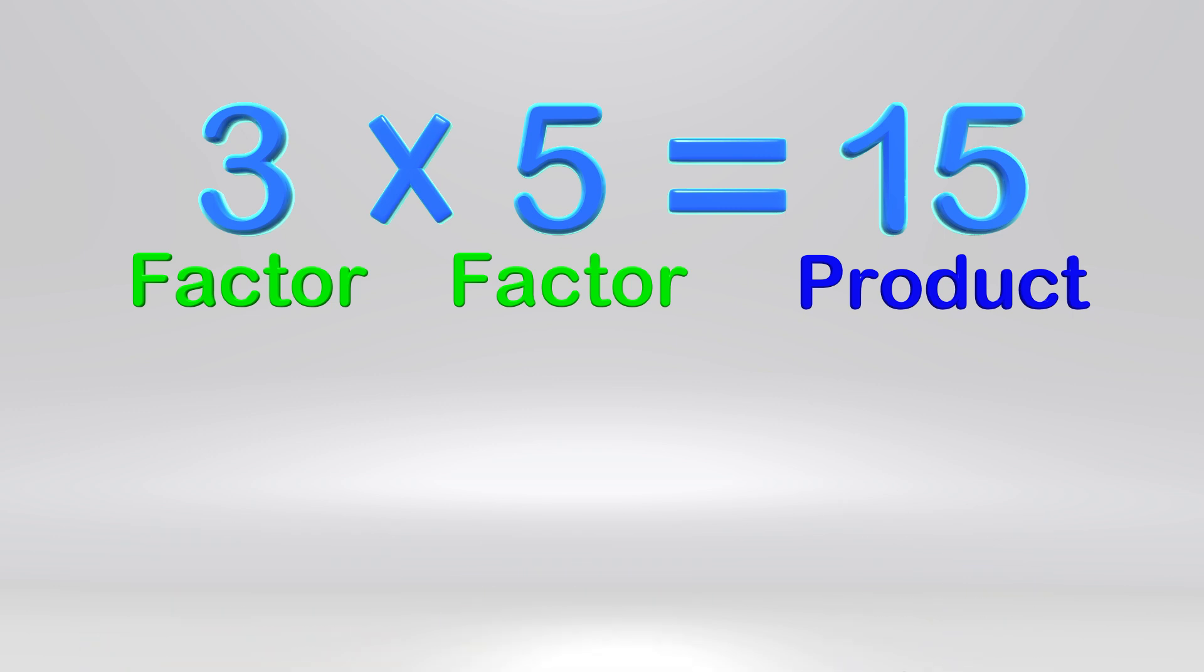The product in a multiplication problem is always going to be bigger than the factors. This makes sense because just like a factory, you take small parts to make one big product.